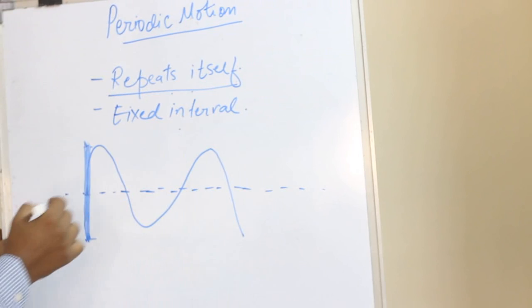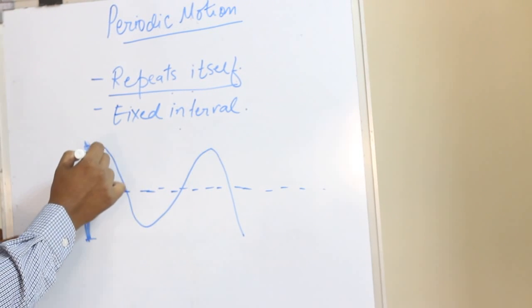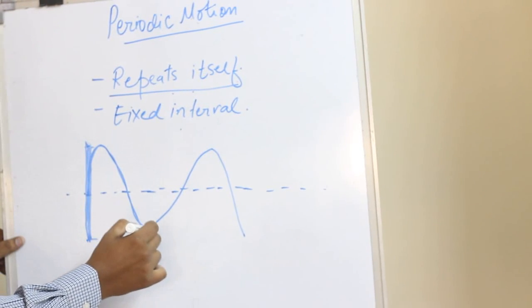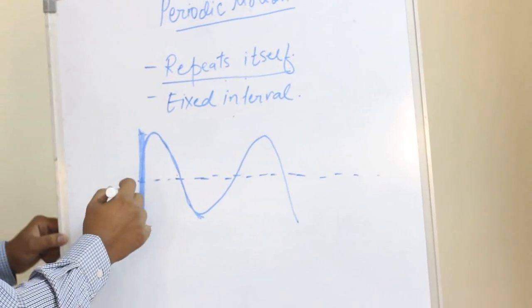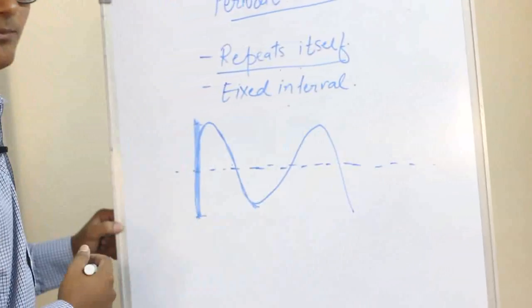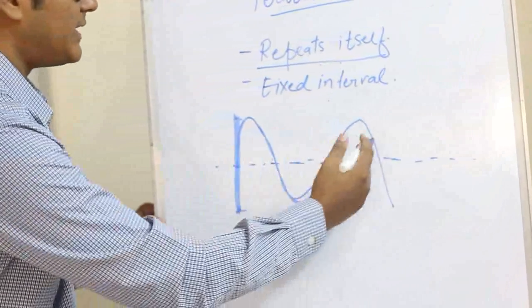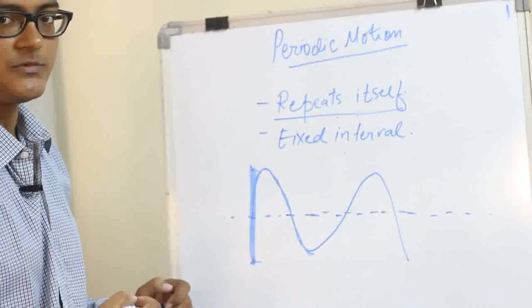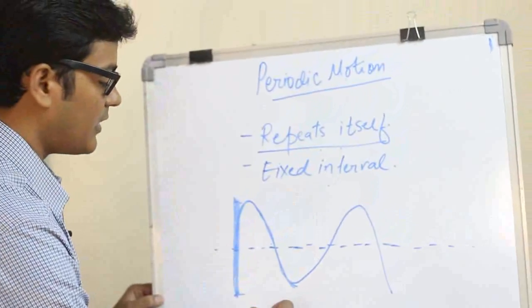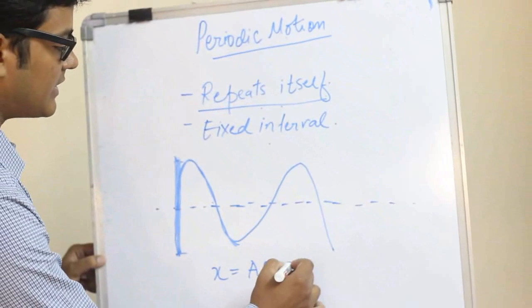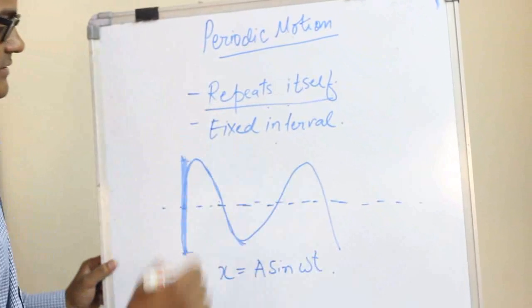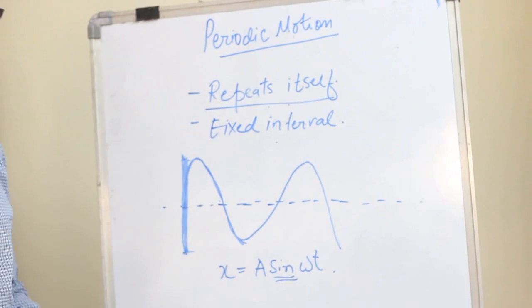It starts from zero, goes to maximum, then goes to zero, then again negative maximum. So when we have a motion in time, the graph that we obtain is a sine curve. That's how the formula X equals A sin(ωt) comes. That's where sine comes from.